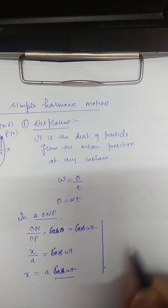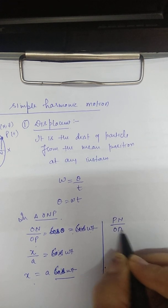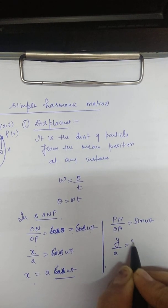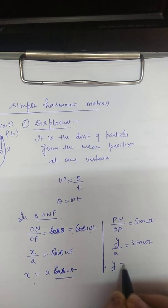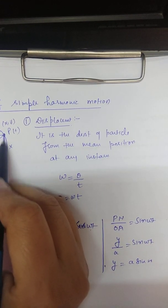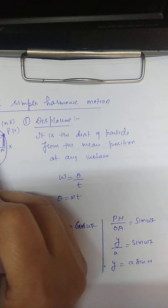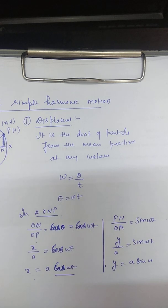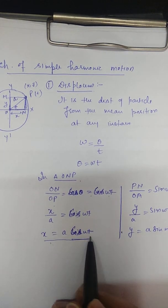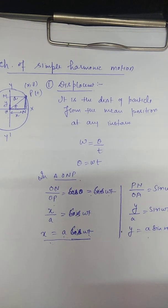If a particle is executing simple harmonic motion along the x direction, take x equal to A cos(ωt) — the graph starts from a maximum value. For the y direction, y equals A sin(ωt) — the graph starts from minimum value. At time t equal to 0, the particle is at point x, which is the starting point.